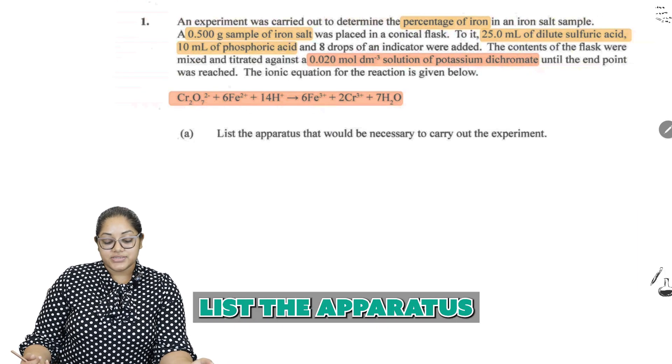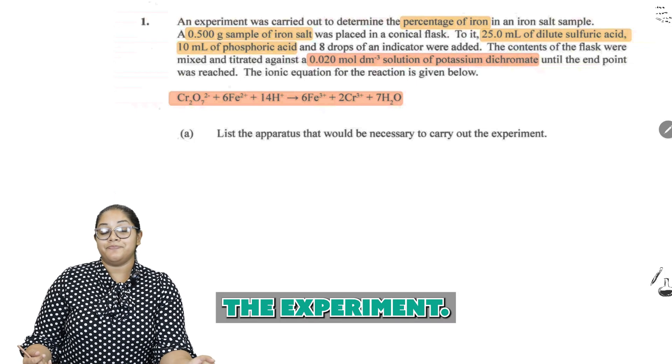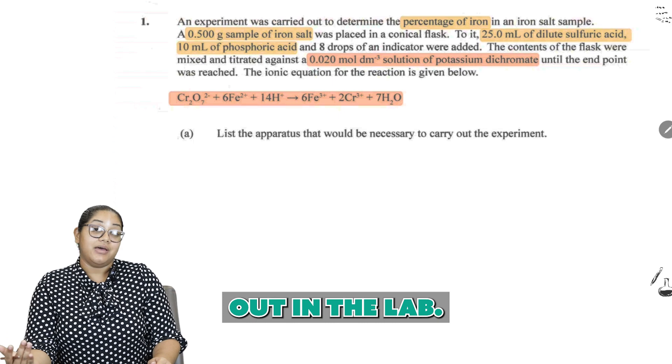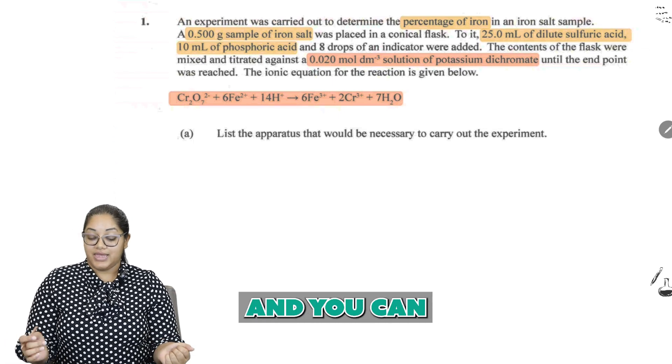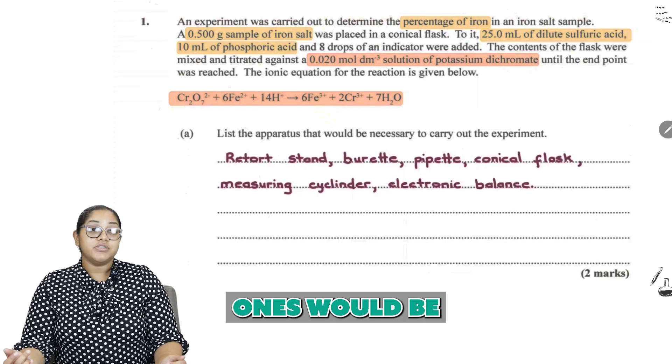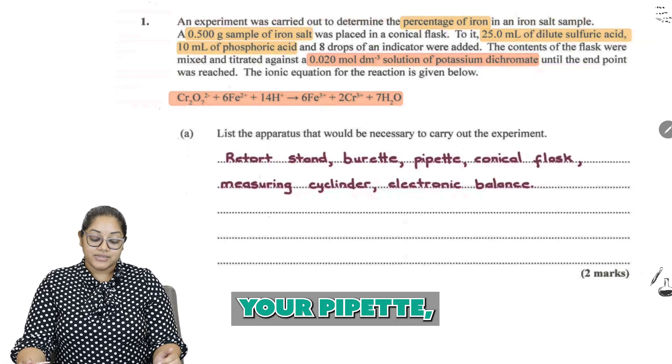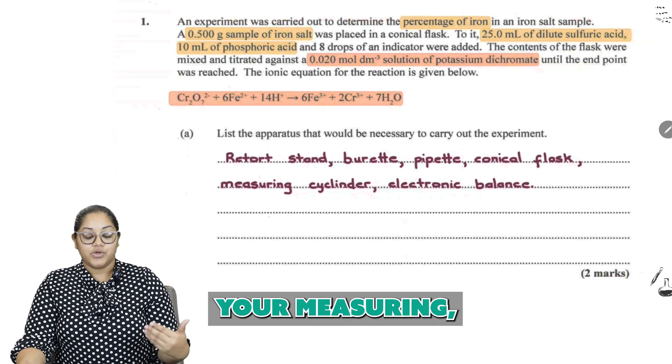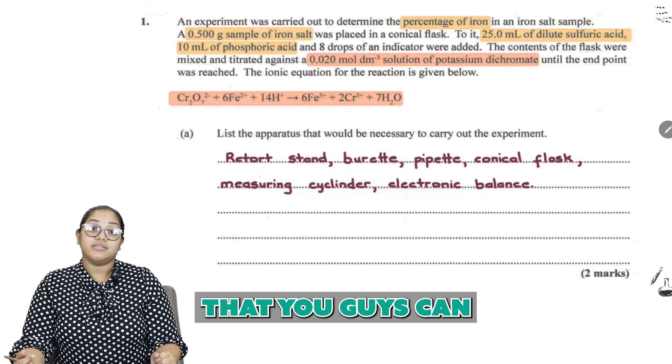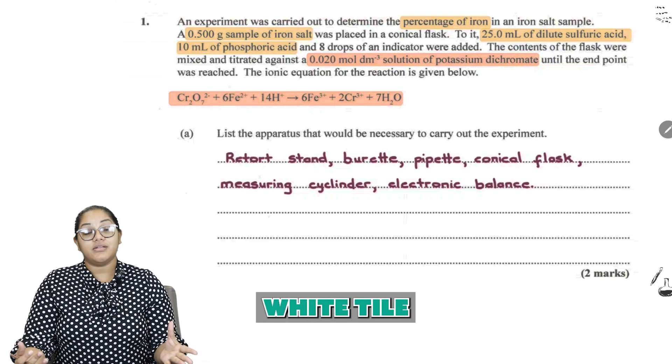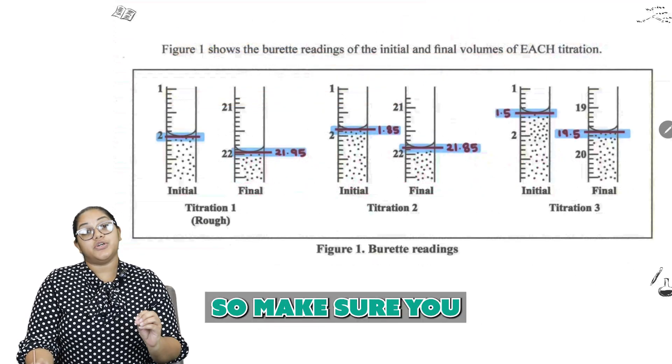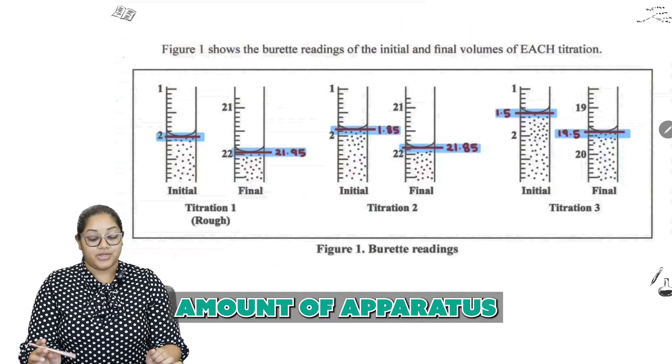Question number 1. List the apparatus that would be necessary to carry out the experiment. Now this would be based on the titration you would carry out in the lab. So the common ones would be your retort stand, your burette, your pipette, the conical flask, your measuring cylinder, the electronic balance. Some additional ones that you guys can include might be a white tile so that you can see the color change. You'll be getting two marks for that particular question, so make sure you have adequate amount of apparatus stated.